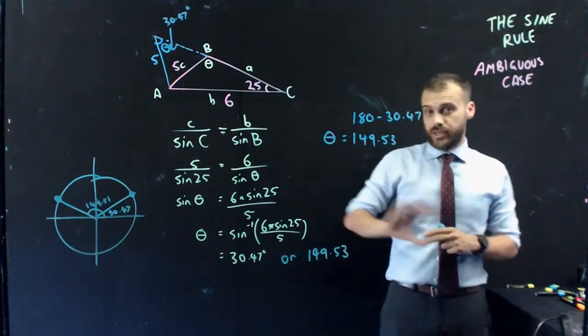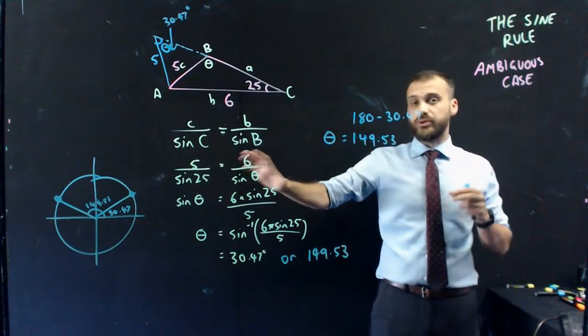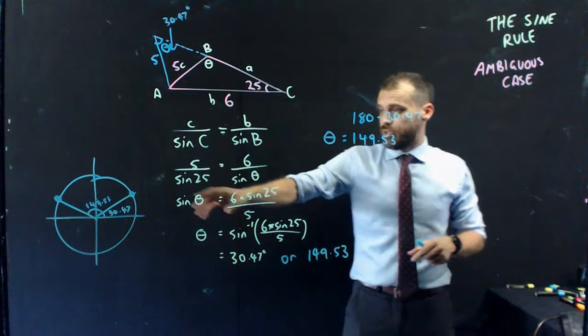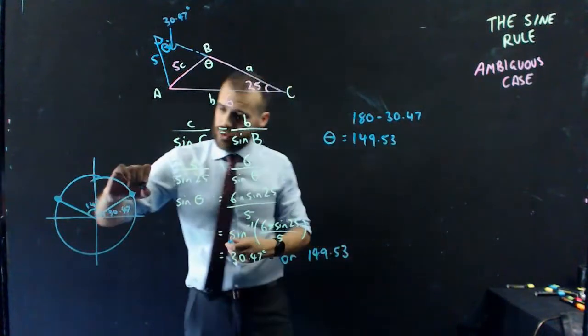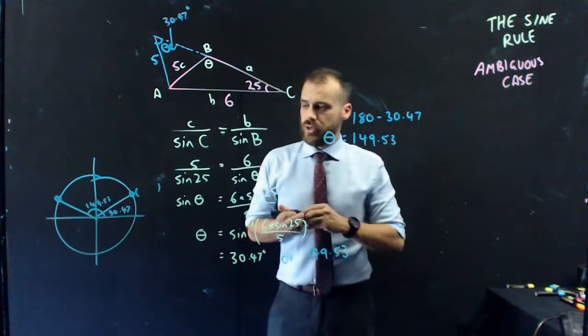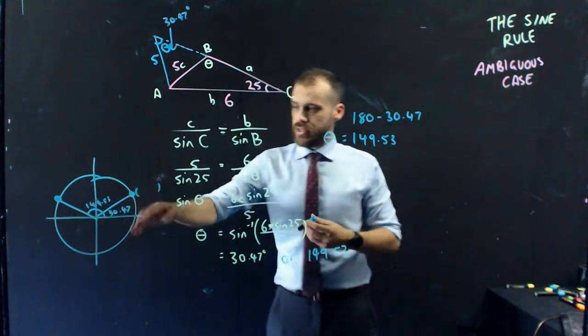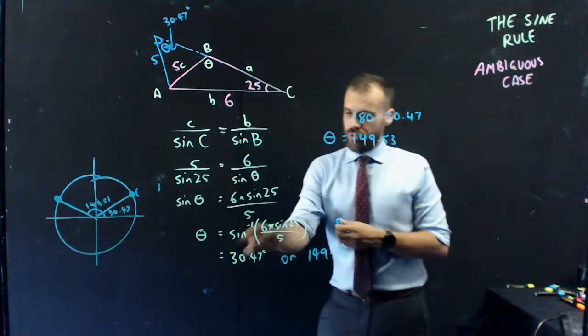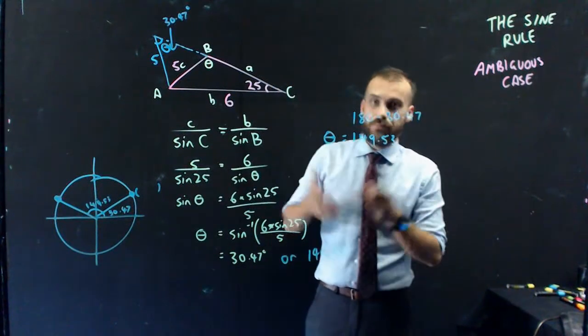Now, all of this can be related back to the unit circle that we all know and love so much. You can see, remember that the coordinates of these dots are cos theta, sin theta, cos theta, sin theta. You can see that we have two answers here for an inverse sine of some positive number.